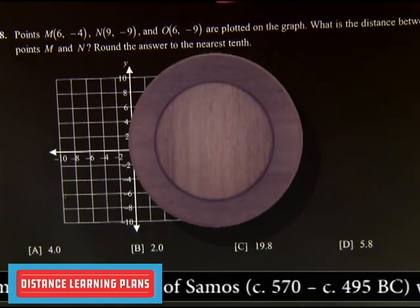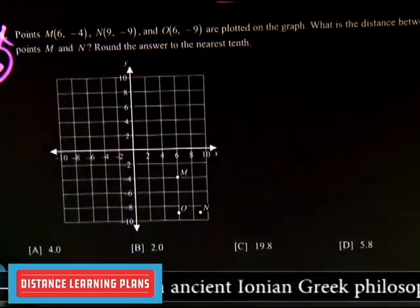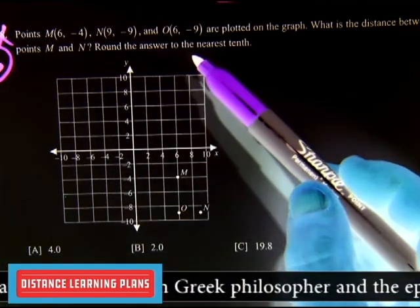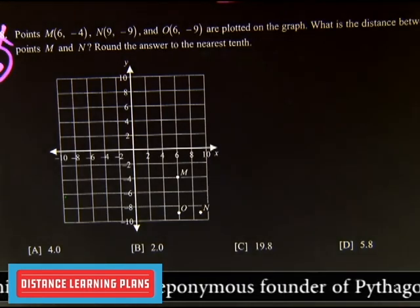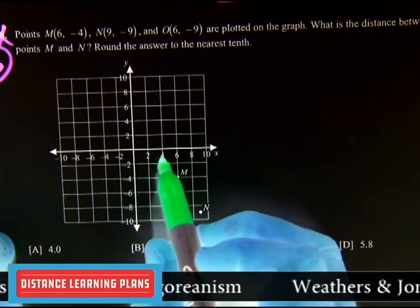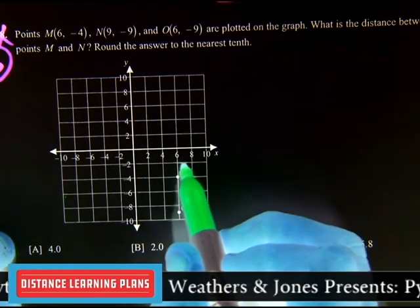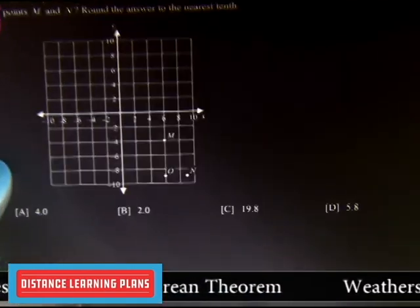Alright, example number 6. Points M, N, and O are plotted on the graph. This is really similar to the last problem, except if you look at the graph, they're actually going 2, 4, 6, 8. That means between any two tick marks, it's actually 2. So, let's just go look at what we've got.